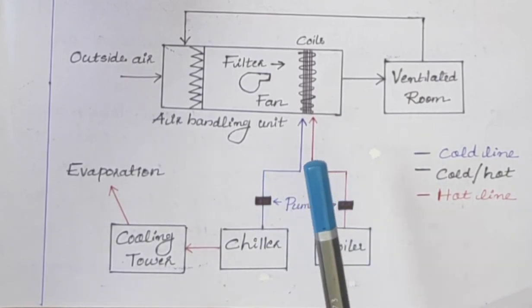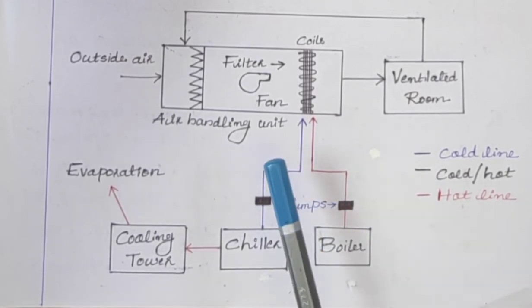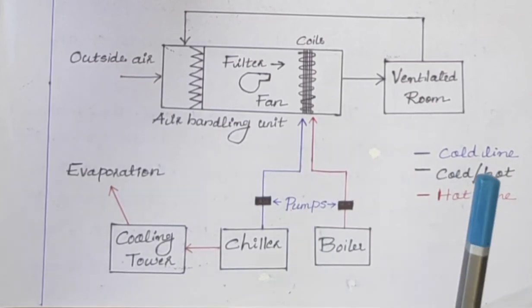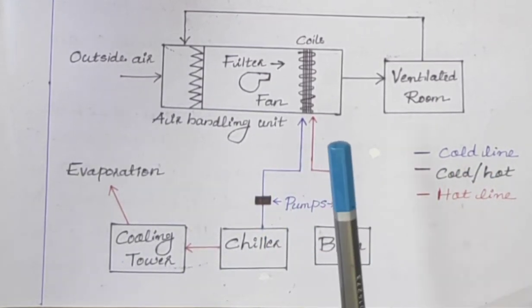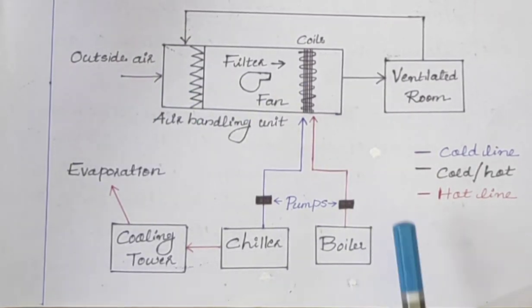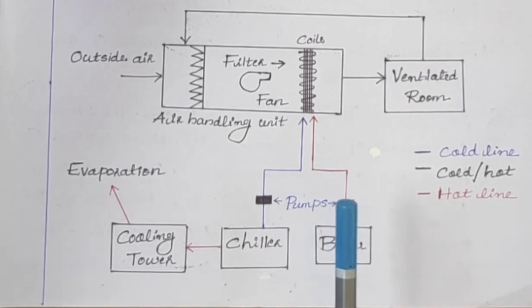In humidifying, it adds steam or water vapor into the area. In dehumidifying, it removes water vapor from the area. The block diagram illustrates the basic functions of HVAC system.